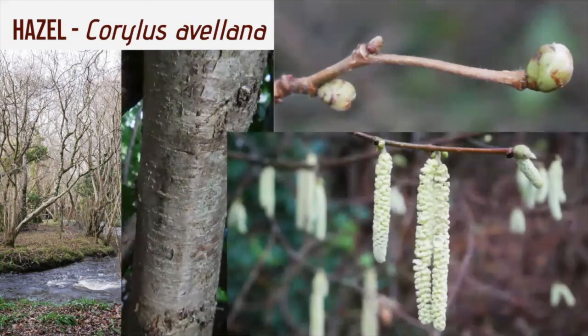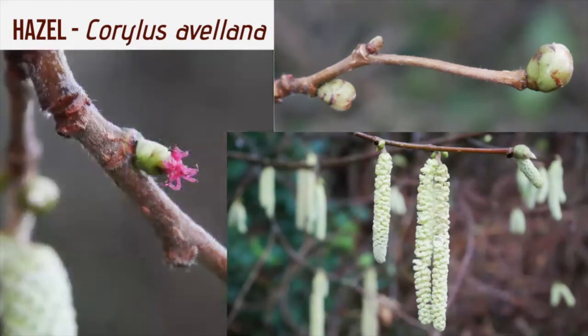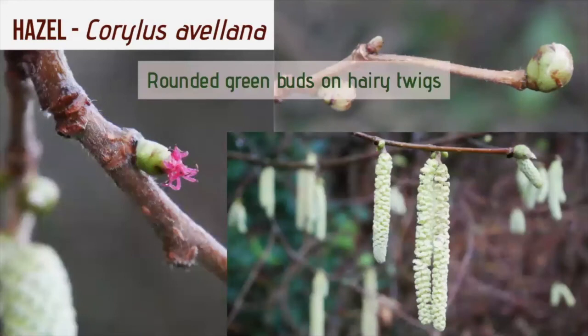Other features visible in winter are the male catkins — the male flowers — which develop through January into February. They hang down releasing pollen into the wind, and there may be over 200 male flowers on each single catkin. If you get a very close look, you'll see the female flowers, which are tiny and red, appearing at the tip of the bud on the branch above the catkin. You can see the red stigmas which collect the windblown pollen from the male flower. Remember: rounded green buds on hairy twigs.